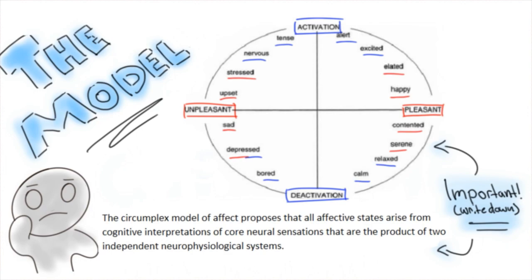The term core neural sensations merely have to do with the stimulus that travels through neural pathways to inform the brain of what is going on. That's still plenty of big science-y words, but what exactly does that all mean? To begin, affective circumplex is quite simply an actual model of the way we process emotions.